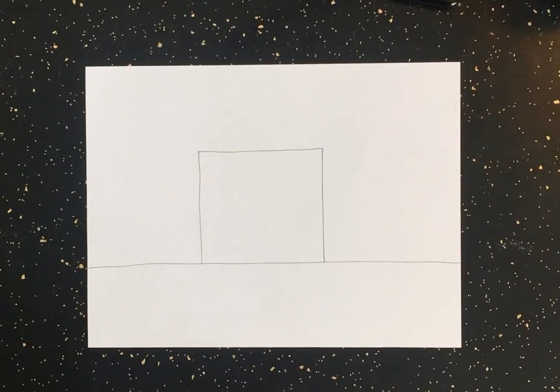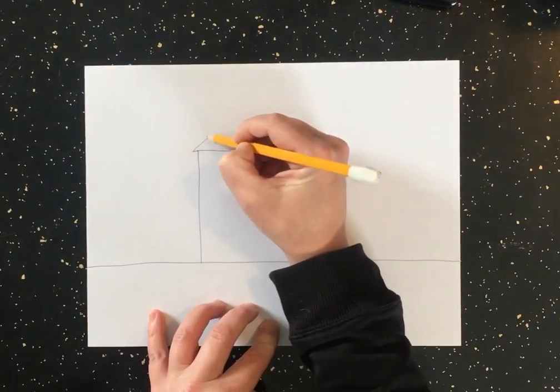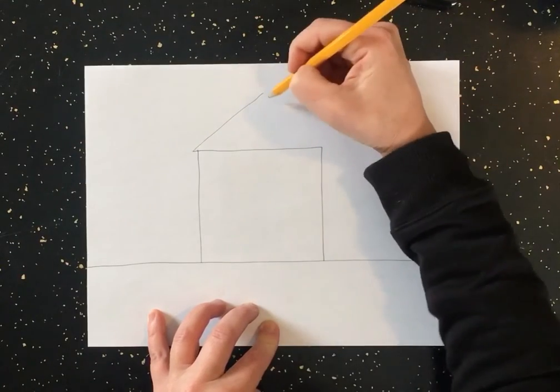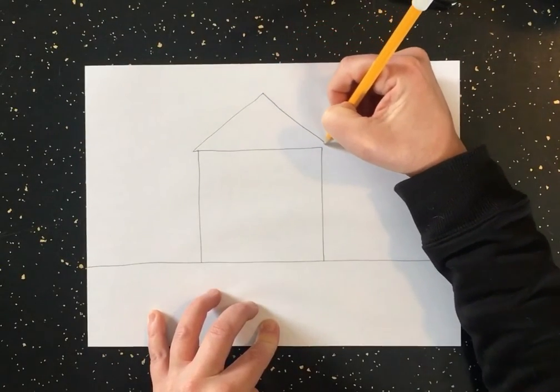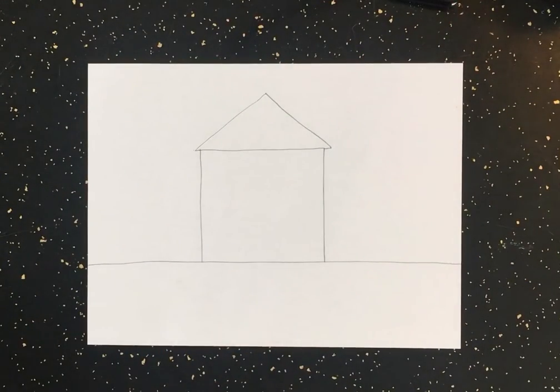Then we're going to add a roof. I'm going to use a triangle for my roof. I'll go out a little bit on the sides. So, this is a really basic way to start your house.